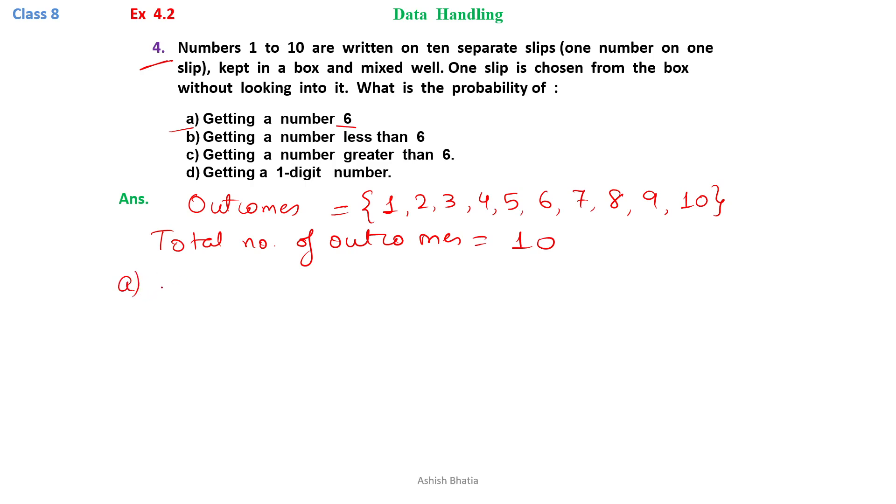Now for portion number A, we have to write first of all favorable outcomes. What are the favorable outcomes for getting a number 6? Getting a number 6, that is only 6.